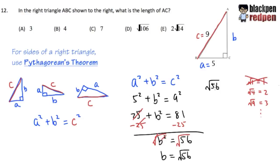Does 4 go into 56? Yes, it does. 4 goes into 56, 14 times. Therefore, we can break down square root of 56 as square root of 4 times square root of 14.